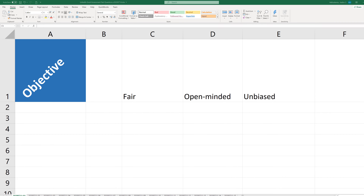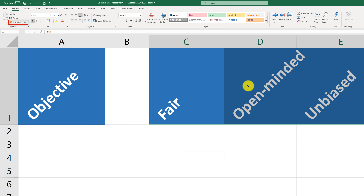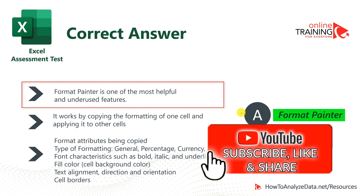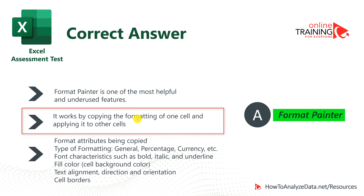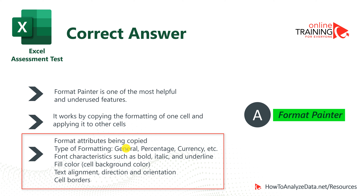To copy formatting in Microsoft Excel, you use Format Painter. For example, cell A1 has a lot of different formatting options. To copy the format of cell A1 to the range C2 through E2, you select the cell, click Format Painter, and then apply it to that range. The correct answer is A, Format Painter — one of the most helpful and underused features of Microsoft Excel. It works by copying the formatting of one cell and applying it to others, including number formats like general, percentage, and currency, font characteristics like bold, italic, and underline, fill color, text alignment, cell borders, and more.